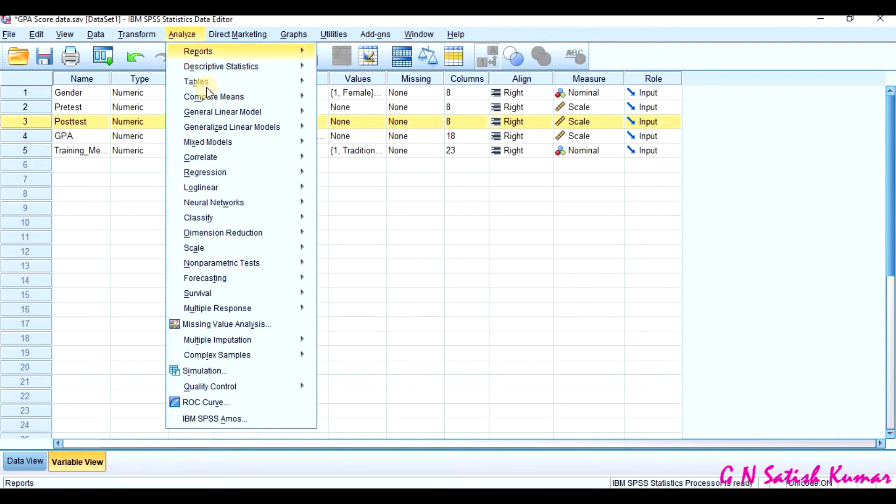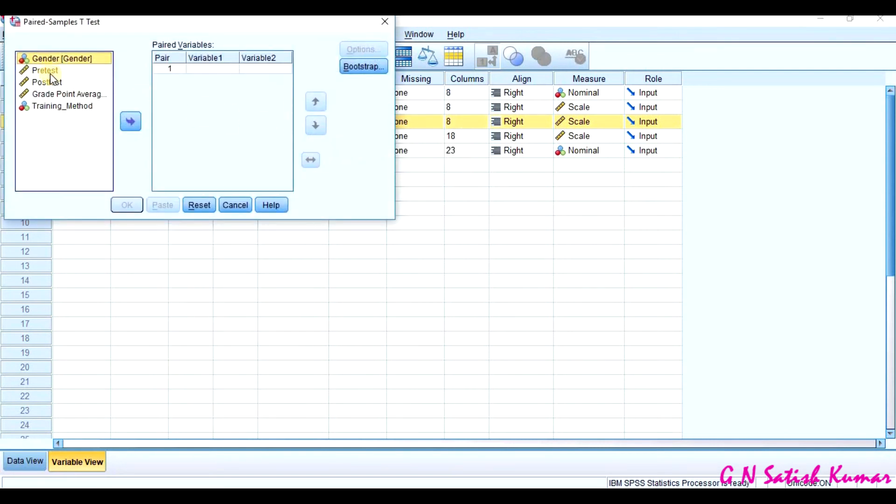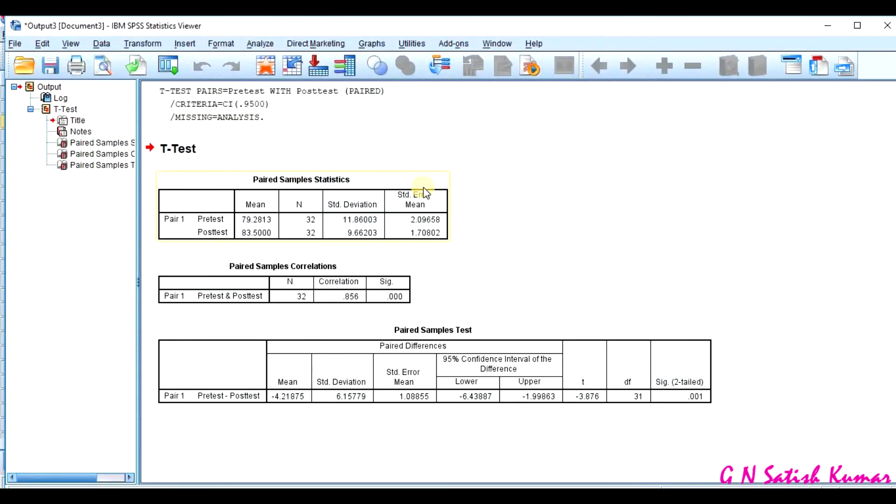I go for Analyze, Compare Means, Paired sample t-test. First, I will select pre-test, next post-test. See, these two variables are taken as a pair and I click OK.